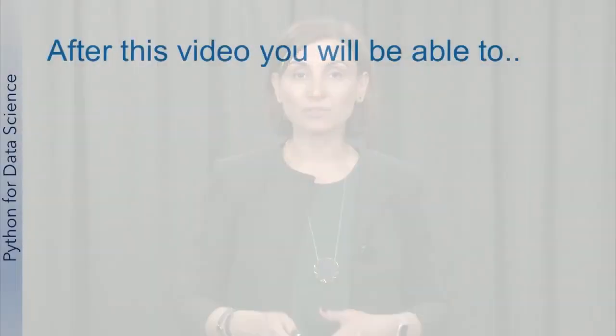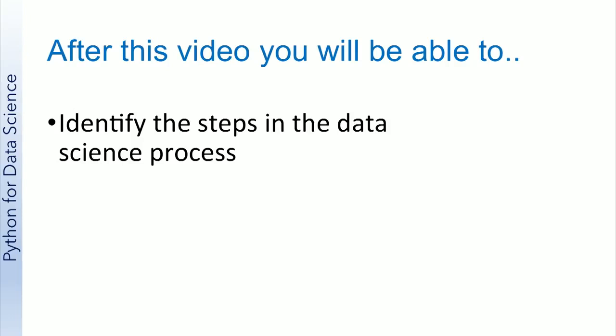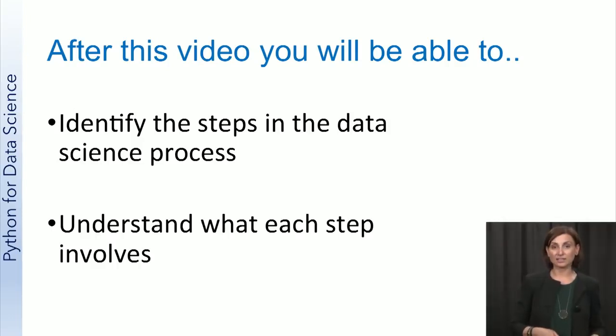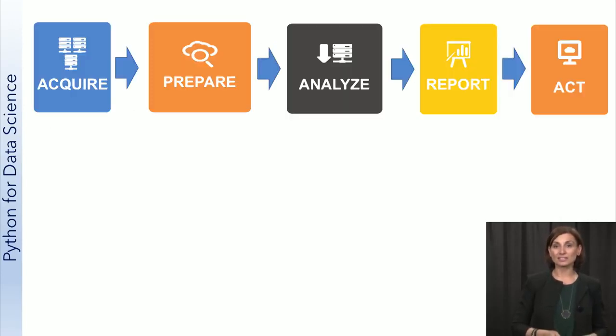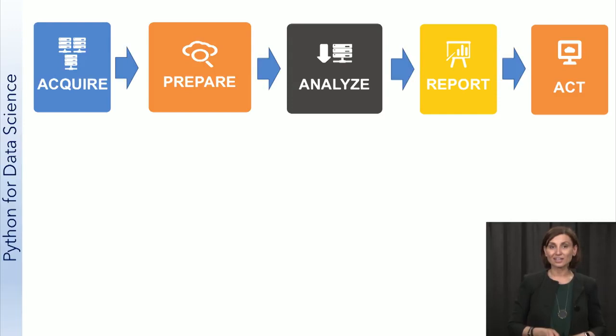Let's now look into the basic steps in the data science process. We will keep applying some or all of these steps in all of the case studies we discuss in this course. After this video, you will be able to identify the steps in the data science process and understand what each step involves. We have already seen a simple linear form of the data science process including five distinct activities that depend on each other. Let's summarize each activity further before we go into the details of each.